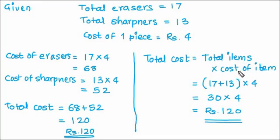Why we were able to do this? Because the cost of each item was same. One more.